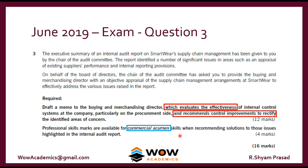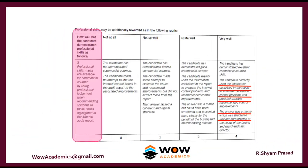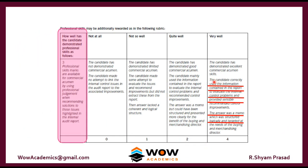In terms of mark allocation for commercial acumen, the candidate correctly used the information in the report — the case information — to evaluate the internal control problems (textbook knowledge), and provided sensible recommended control improvements (real-world knowledge). All three types of knowledge were applied, and that is where the mark is reserved.